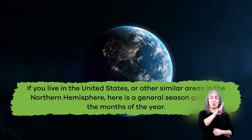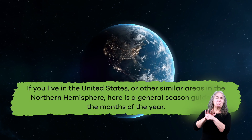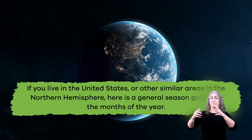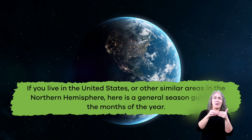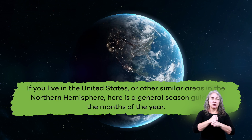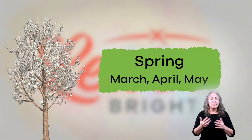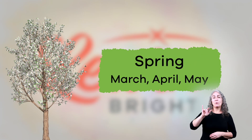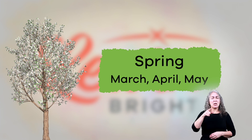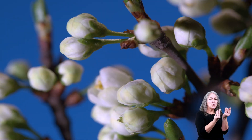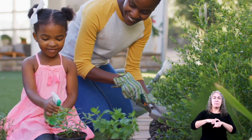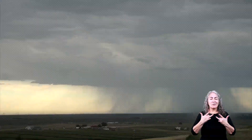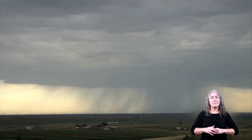If you live in the United States or other similar areas in the Northern Hemisphere, here is a general season guide for the months of the year. Spring: March, April, and May. You might notice that plants start to bud and flower during the springtime. This season is also a great time to plant a garden, because there is usually a lot of rainfall.